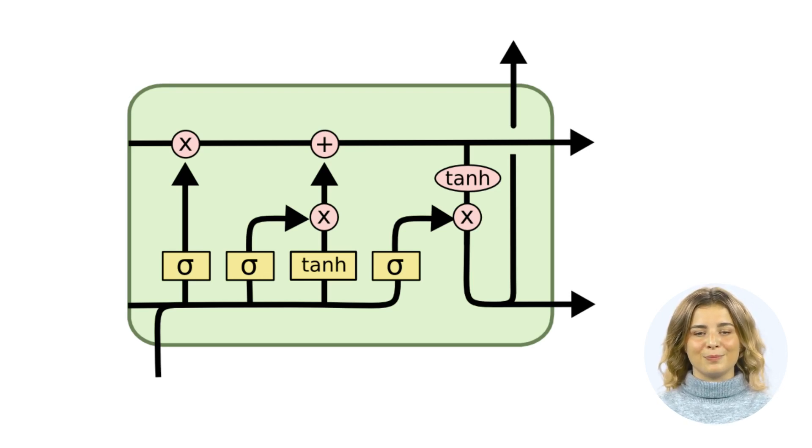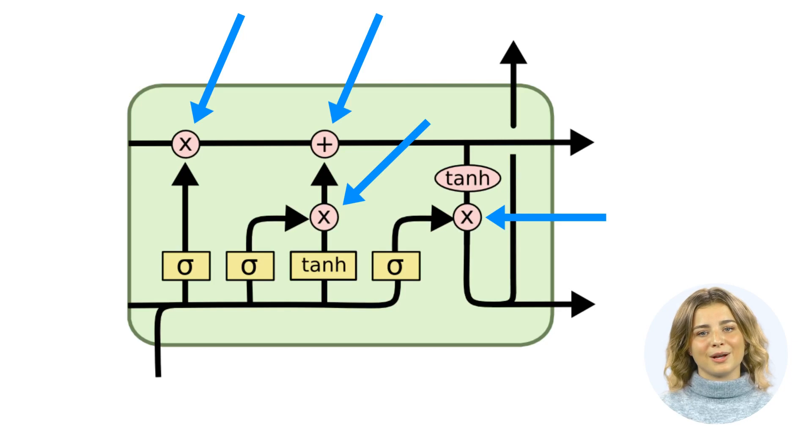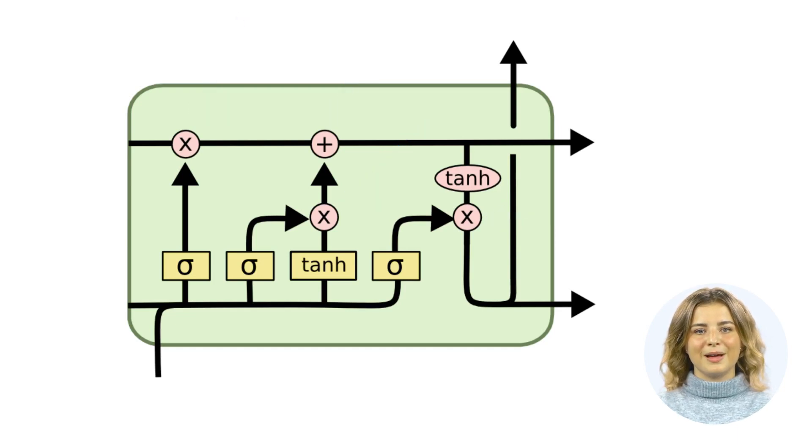The LSTM cells in sequence-to-sequence models work by maintaining a so-called cell state, which is a kind of conveyor belt that carries information across time steps. LSTMs have gates that regulate the flow of information onto and off of this conveyor belt. They decide what information to keep or throw away each time step based on the current input and the previous hidden state. This mechanism helps LSTMs mitigate the vanishing gradient problem, a common issue with traditional RNNs where they struggle to learn from information far back in the sequence.